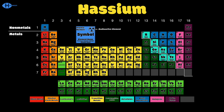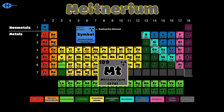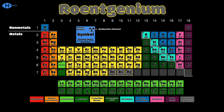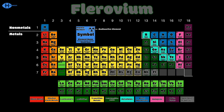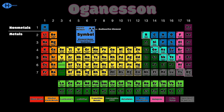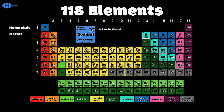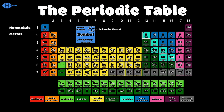The rest of the elements have unknown properties: meitnerium, darmstadtium, roentgenium, copernicium, nihonium, flerovium, moscovium, livermorium, tennessine, and oganesson. The periodic table has 118 elements, usually classified into 10 commonly used sets, with 18 groups and 7 periods.